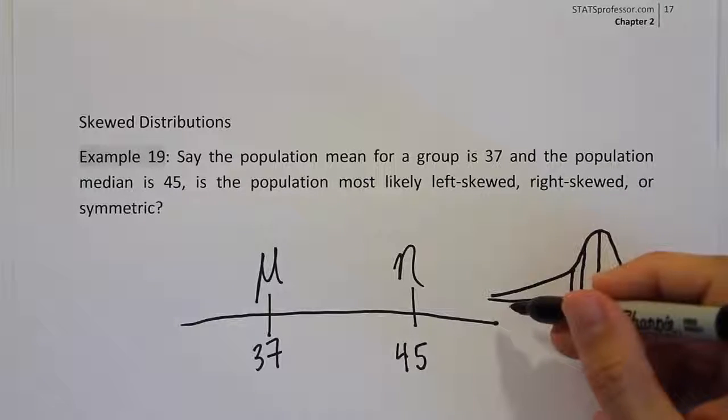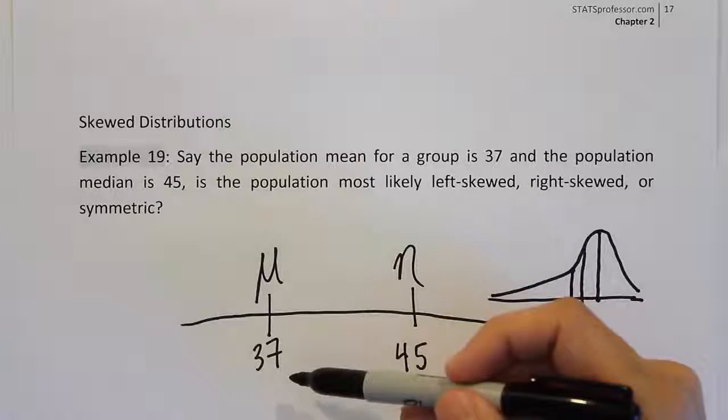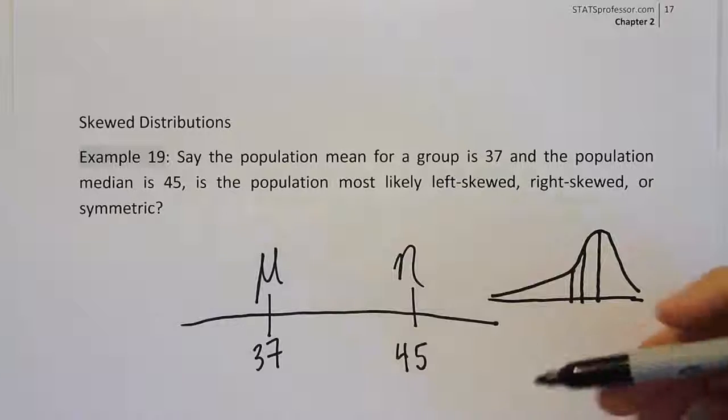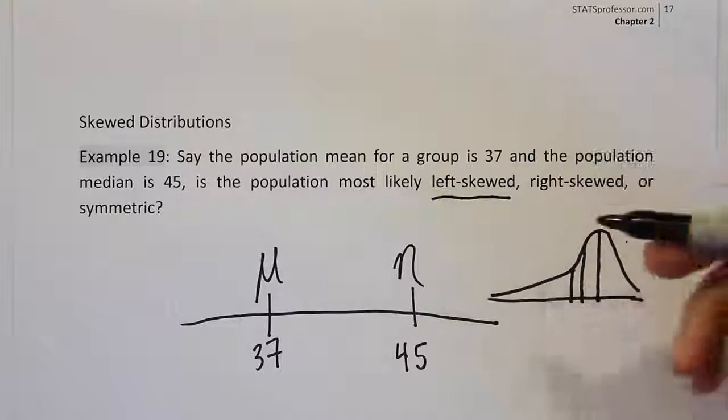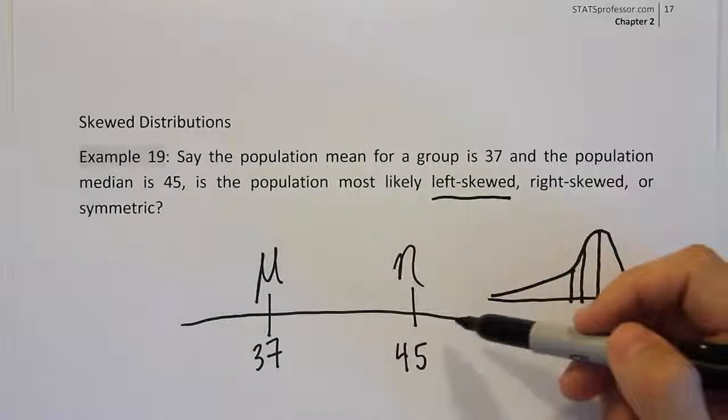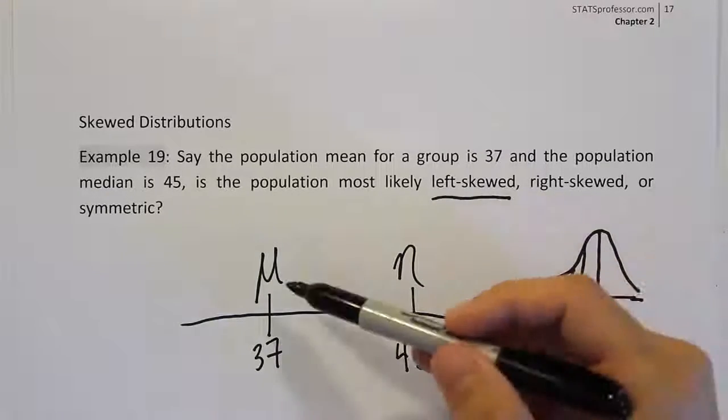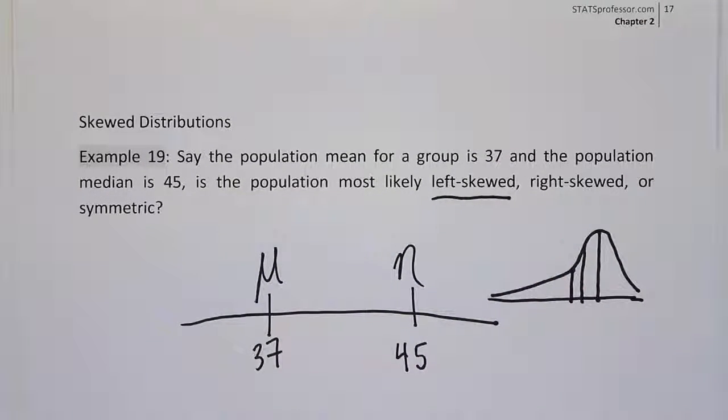So the distribution is left skewed because the mean is on the left-hand side. So all you have to remember to answer the question is that this distribution is left skewed simply because the mean is on the left-hand side of the median. And we're dealing with the population values here.